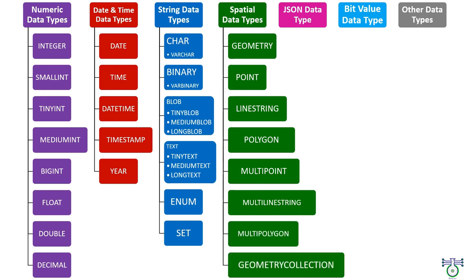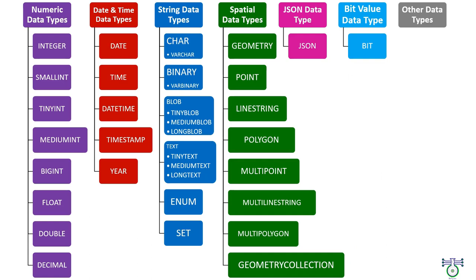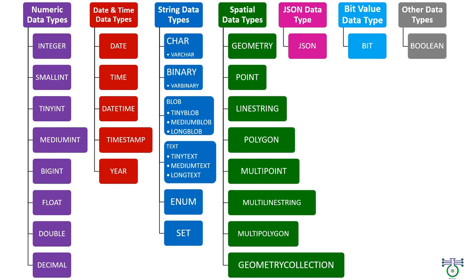JSON data types: MySQL also supports the JSON data type, which is used to store JSON (JavaScript Object Notation) documents. The JSON data type enables efficient storage and retrieval of JSON documents. MySQL also supports the bit data type, which is used to store bit values and is supported for MyISAM, Memory, InnoDB, and NDB tables.